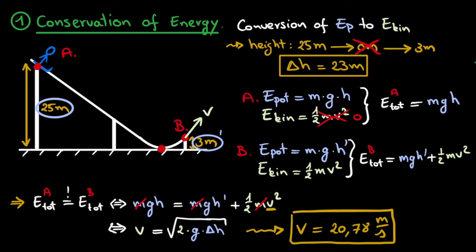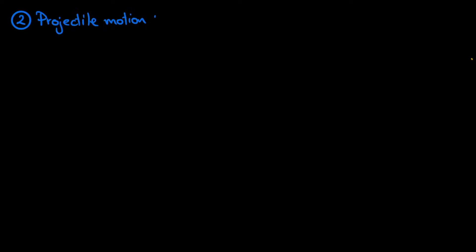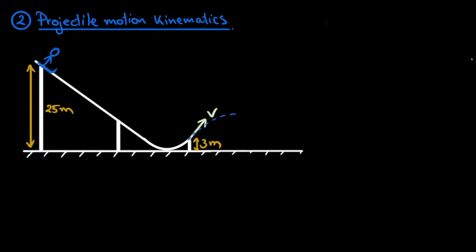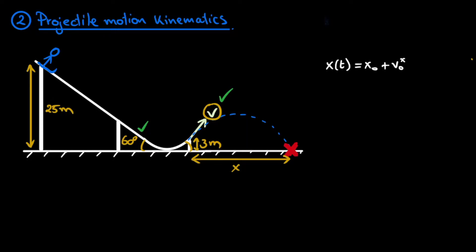It will be this velocity that we take to the next stage of the problem, where we use projectile motion to calculate how far she will actually fly. This brings us to the kinematics of projectile motion, which describe the trajectory of the ski jumper once she leaves the ramp. For this we need the initial velocity v, which we got in the previous part, and the angle at which she leaves the ramp, which is 60 degrees. We now have all the quantities needed to fill into the kinematics equations.